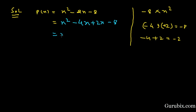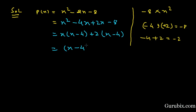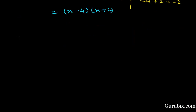Now we shall take x common from the first two terms, giving us x into (x minus 4). And from the last two terms, we shall take 2 common, giving plus 2 into (x minus 4). Now we shall take (x minus 4) common from these two terms.